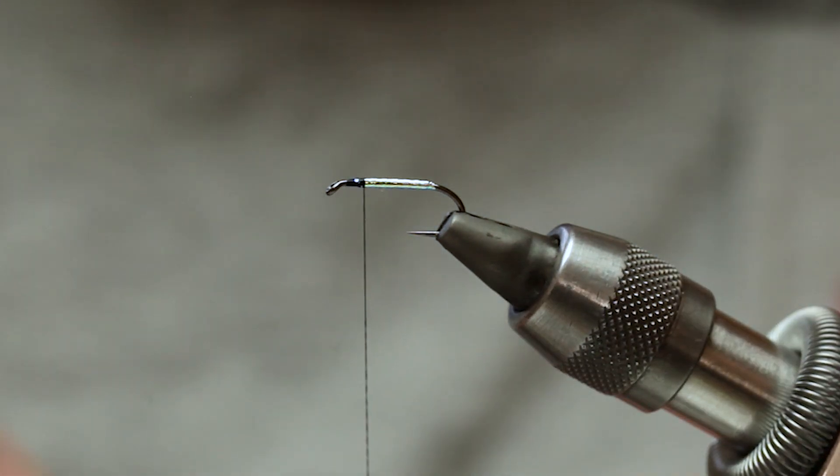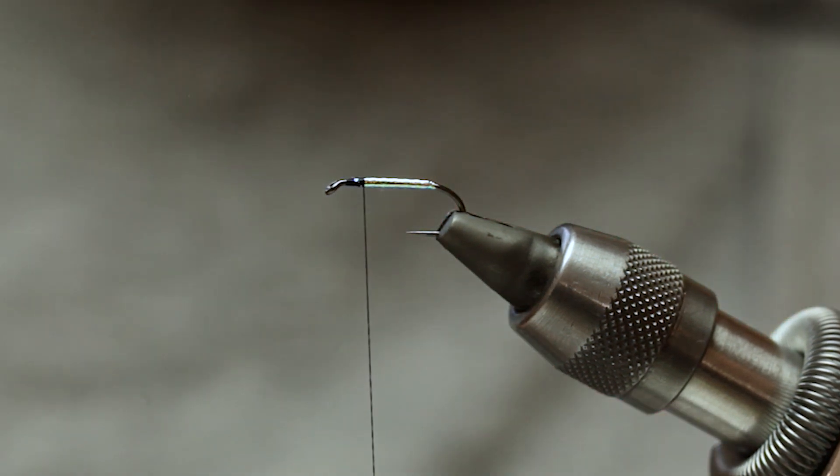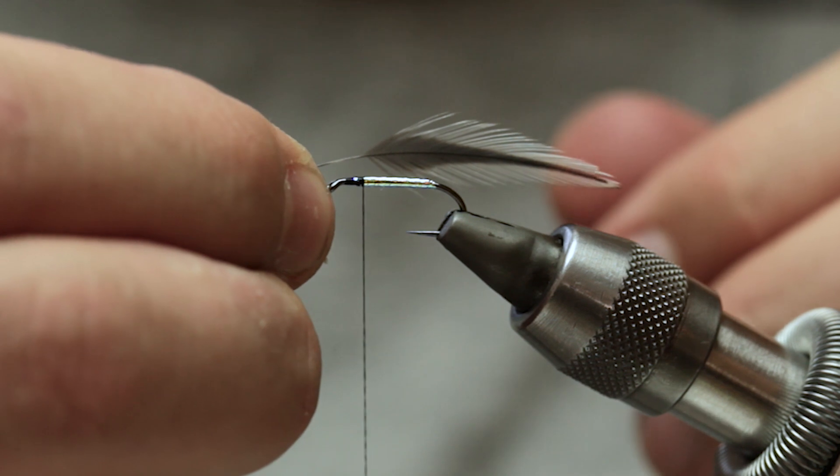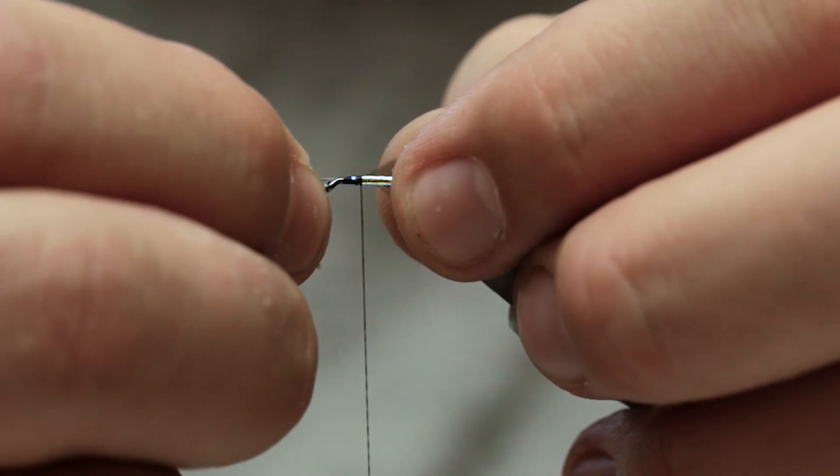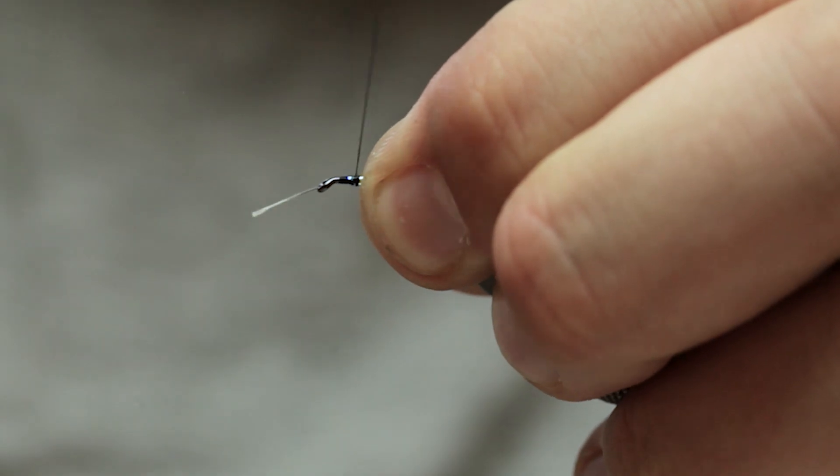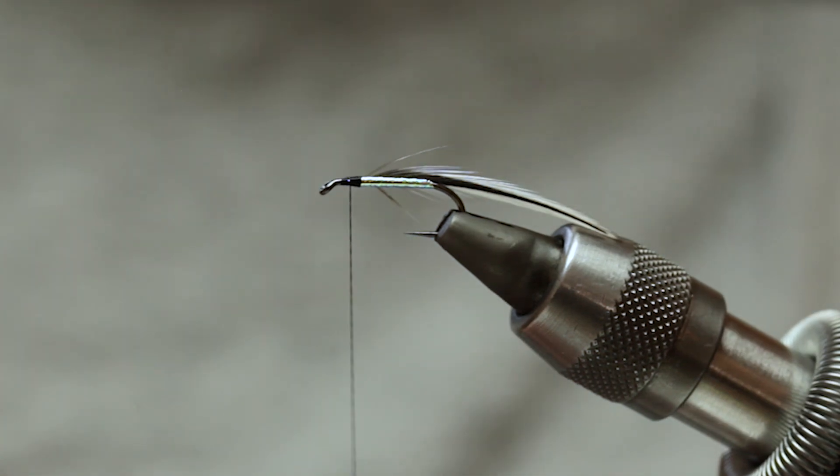So now you're going to prepare your silver badger hackle. Take all the fluff from the bottom. Tie it on the side with the good side facing you. Catch it in. Break it off.